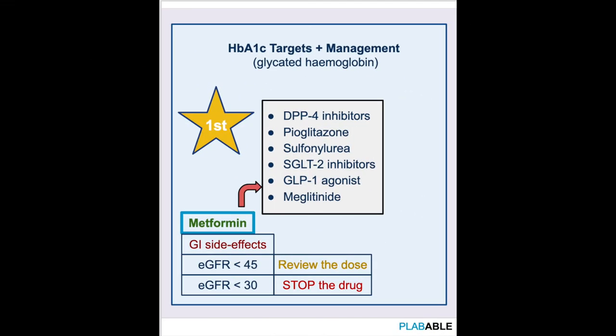If there is any contraindication to metformin — for example, the patient has CKD or a GFR less than 30 — then we have a list of drugs to choose from. These include DPP-4 inhibitors, pioglitazone, sulfonylureas, SGLT-2 inhibitors, GLP-1 agonists, or meglitinides. Metformin remains the first choice, but if contraindicated, any of these drugs can be used as the first-line agent.